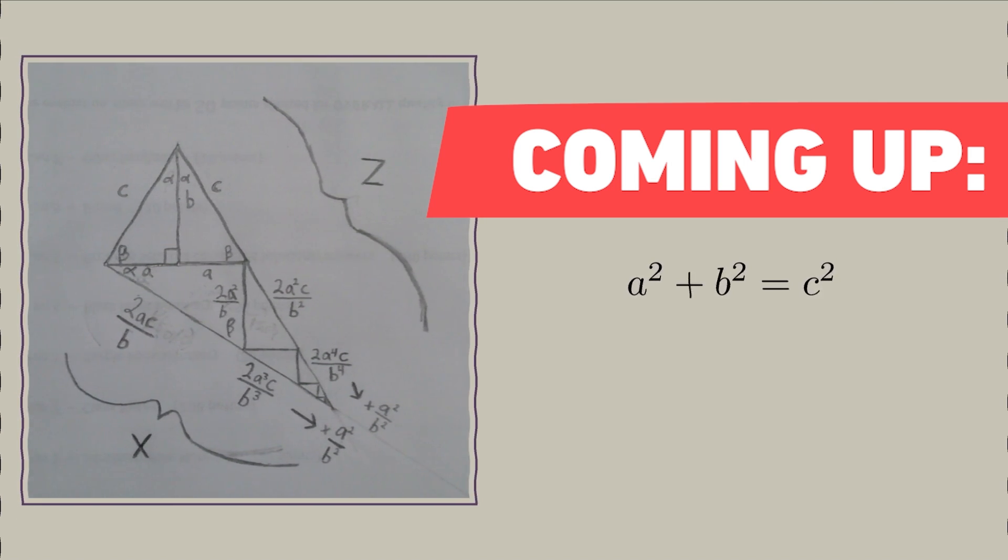Without further ado, let's get to the proof. We, of course, start off the same way every Pythagorean proof starts, by drawing a right triangle ABC as the sides.